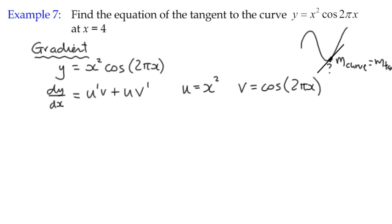And then we need to find what each of these derivatives is. We know the derivative of x squared is 2x. And the derivative of this trig function, well, let's have a look. It's a composite function.